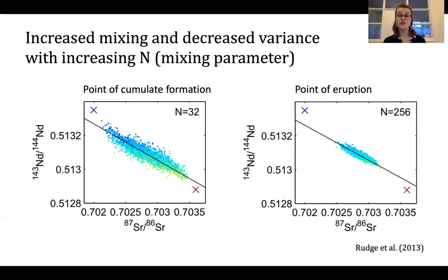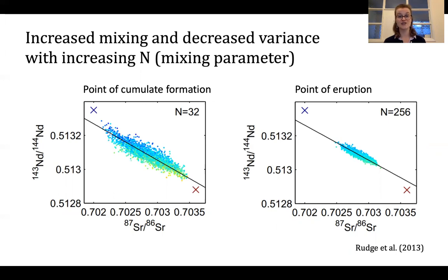Studies show that magma mixing in crustal magma chambers can compromise the heterogeneity recorded in eruptive lavas, but our lower crustal cumulates may have managed to avoid excessive mixing and homogenisation prior to crystallisation, allowing us to place more accurate constraints on short-scale isotopic heterogeneity beneath Hualalai.